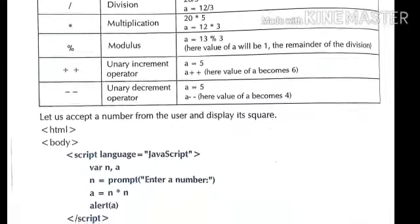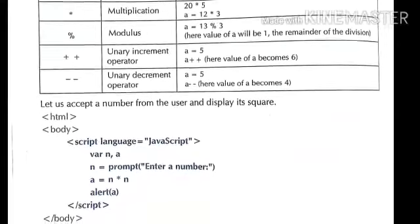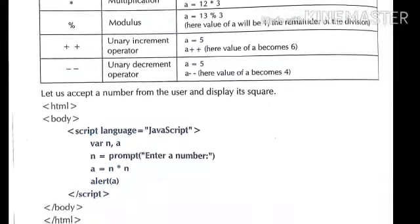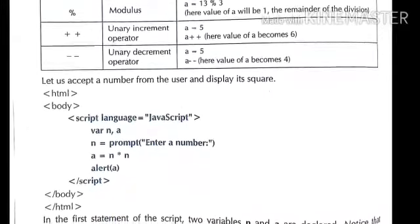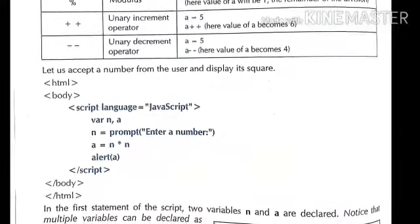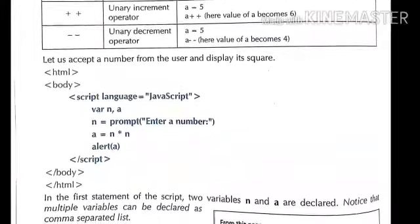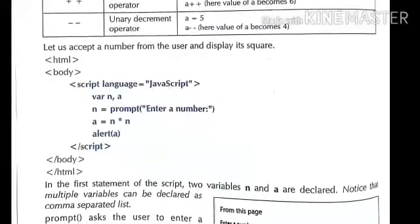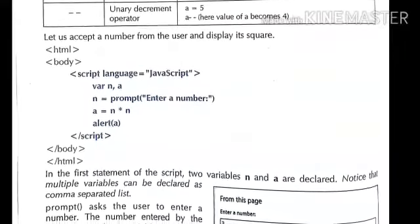For example, in an HTML body with a script tag with language set to JavaScript, we declare variables: var n, a, b. Here n and a, b are variables. n equals to prompt('Enter a number') — prompt is a function that asks the user for a value and stores it in variable n. Then a equals to n into n, meaning a's value will be n multiplied by n — whatever value the user enters via prompt, n*n will be stored in a.